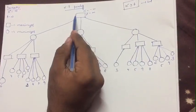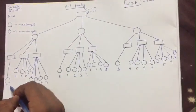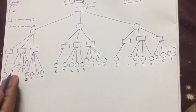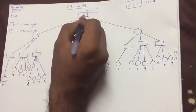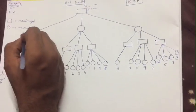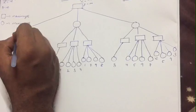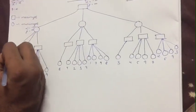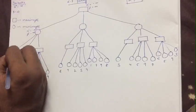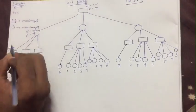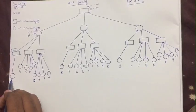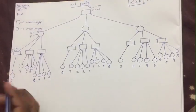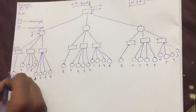In alpha-beta pruning we follow a depth-first traversal path, iterating downward. Here again, alpha is minus infinity and beta is infinity. At this point we have a single minimizer node with value 6, so we write 6 here.